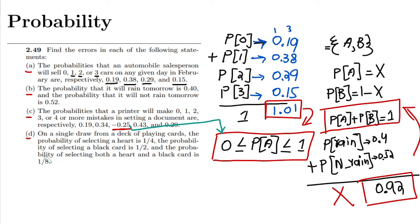Similarly in part D, on a single draw from a deck of playing cards, the probability of selecting a heart is 1/4 (that's correct), the probability of selecting a black card is 1/2 (that is also correct), and the probability of selecting both a heart and black card is 1/8.